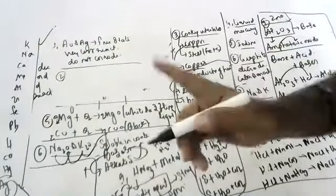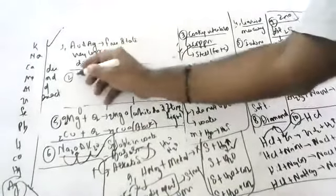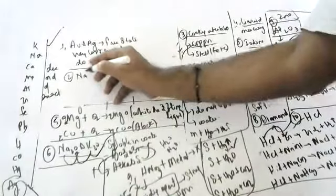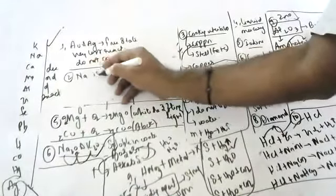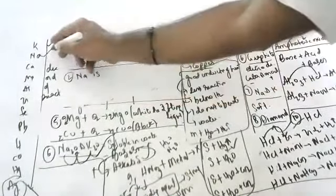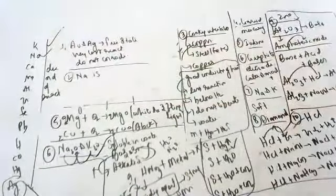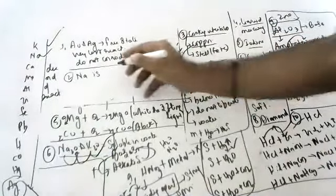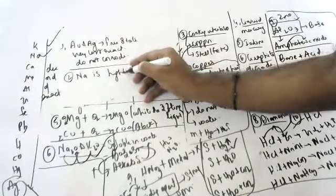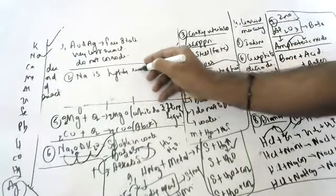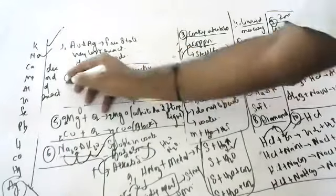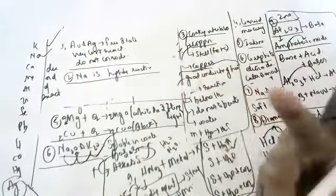Sodium is never found in free state - why? Because sodium is highly reactive. It is highly reactive, so it immediately combines with other elements and is never found in its pure elemental form in nature.